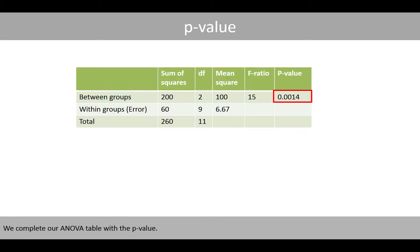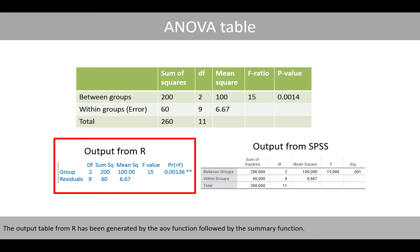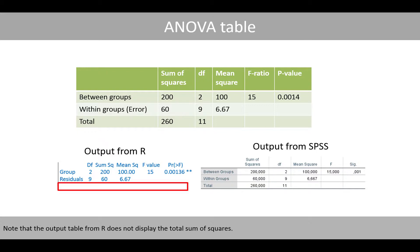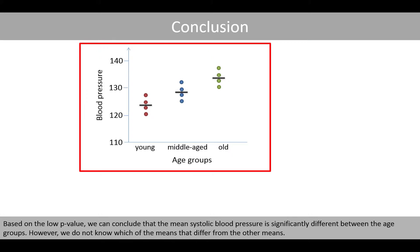We complete our ANOVA table with the P-value. We can compare our table with the output tables from R or SPSS; both outputs look very similar to our table. The output table from R has been generated by the aov function followed by the summary function. The output from R shows the degrees of freedom in the first column, whereas SPSS displays these in the second column. Note that the output table from R does not display the total sum of squares. Numerical differences in the P-values are due to rounding. Based on the P-value, we can conclude that the mean systolic blood pressure is significantly different between the age groups.